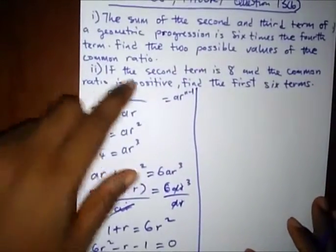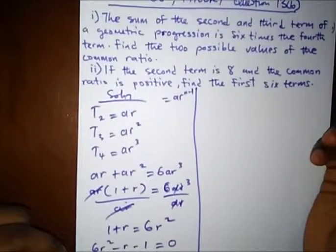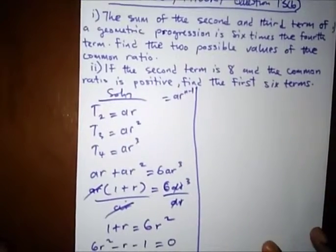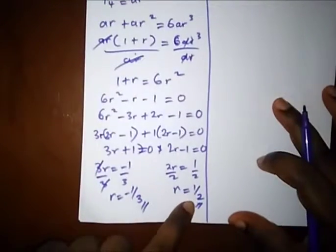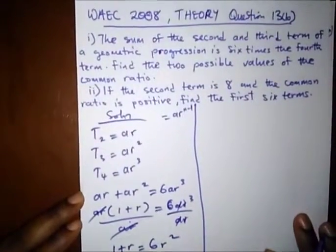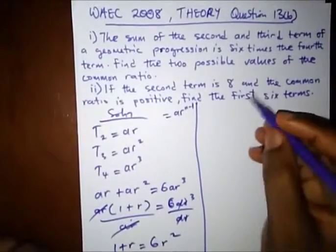The question says, if the second term is 8 and the common ratio is positive, find the first 6 terms. Common ratio is positive, so we'll pick this positive value which is half. Since the second term is 8, let us first find the first term.